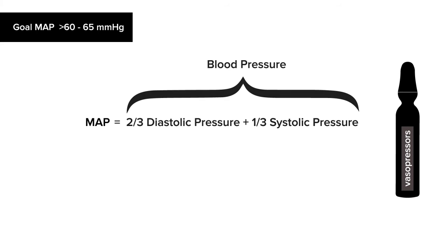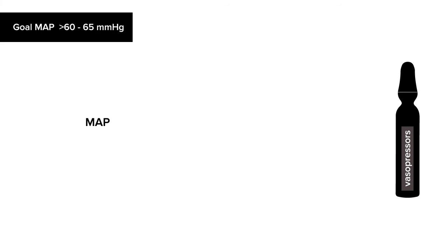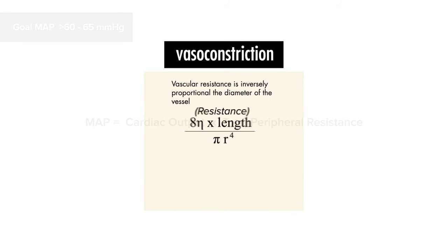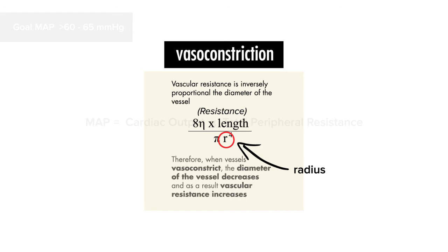Pure vasopressors, or the drugs that work to cause vasoconstriction, maintain a mean arterial pressure mostly by augmenting vascular resistance. When a blood vessel constricts, its diameter or radius becomes smaller, and as a result, vascular resistance increases.